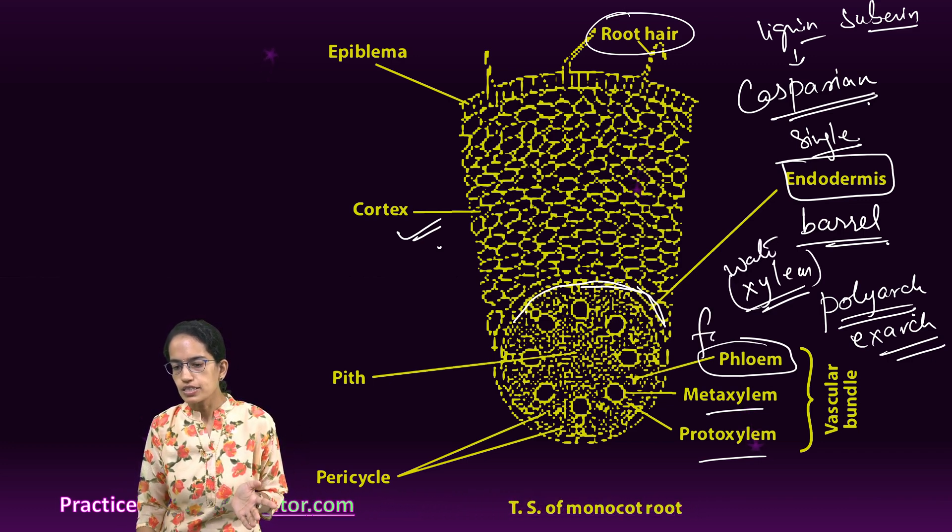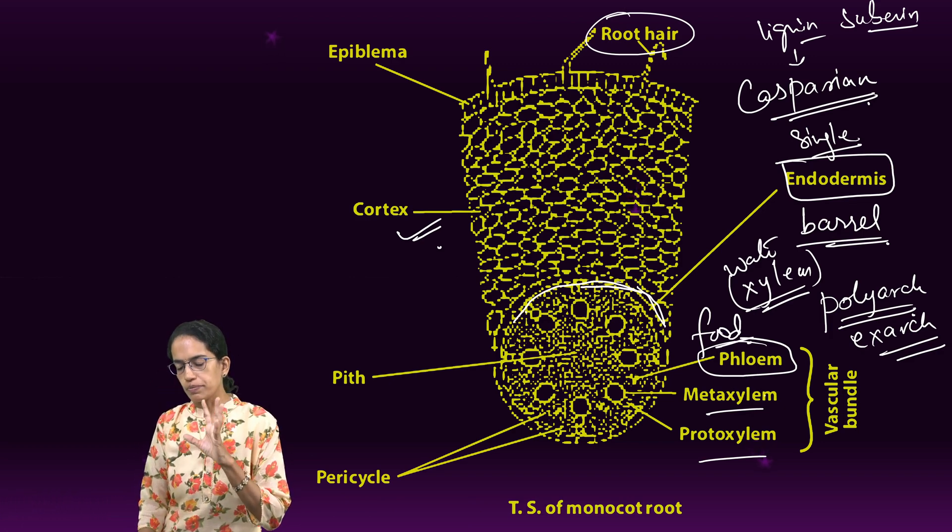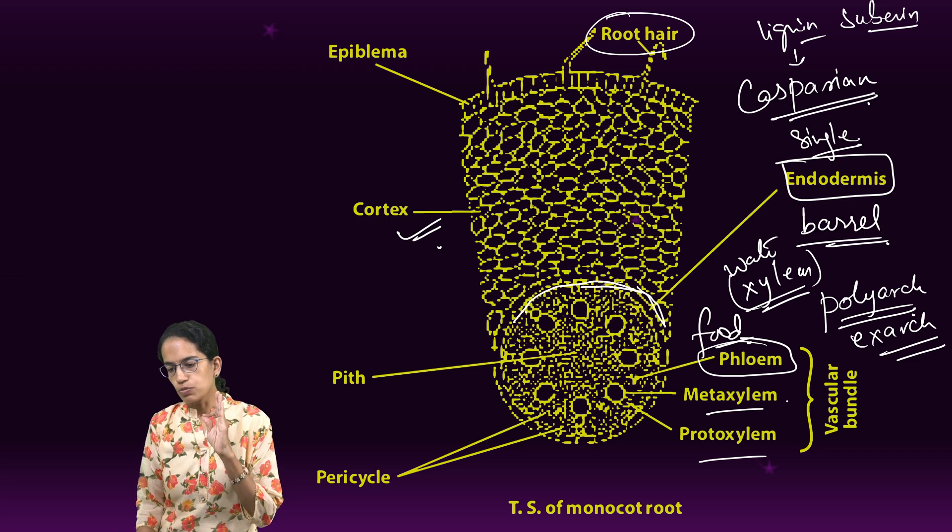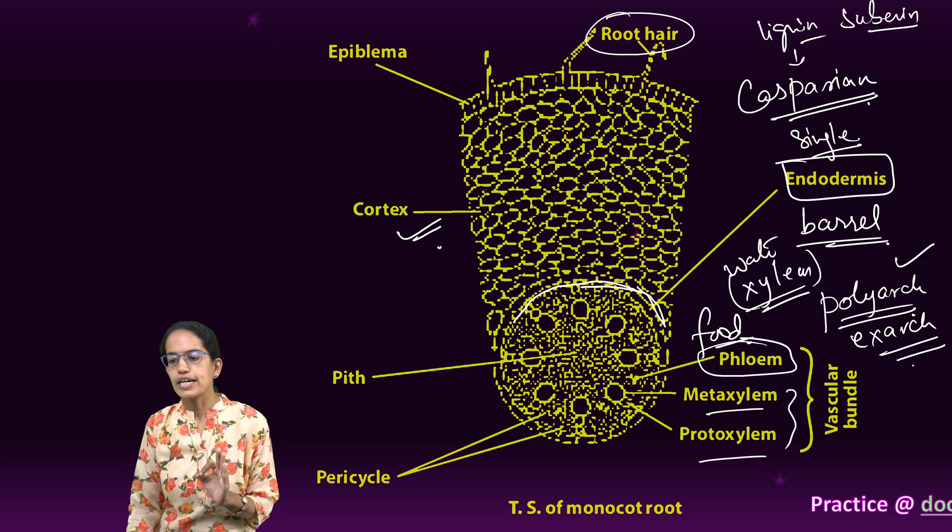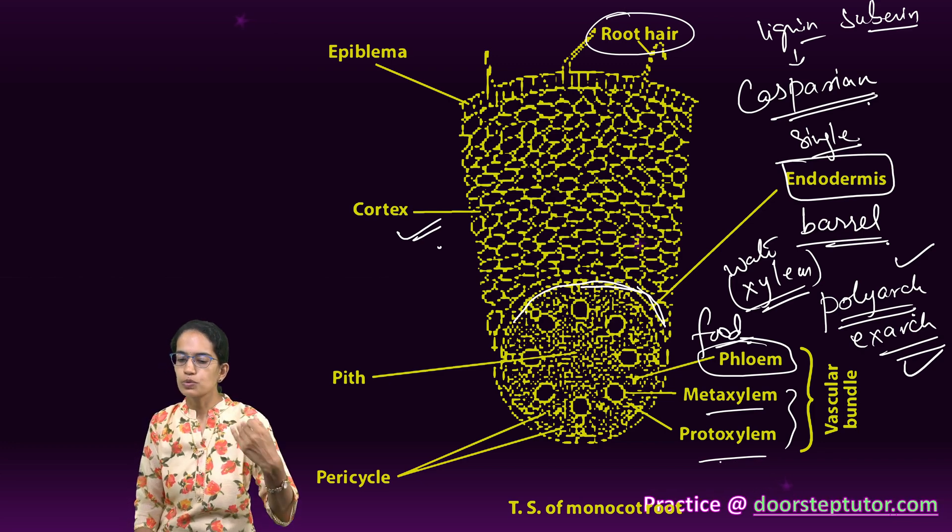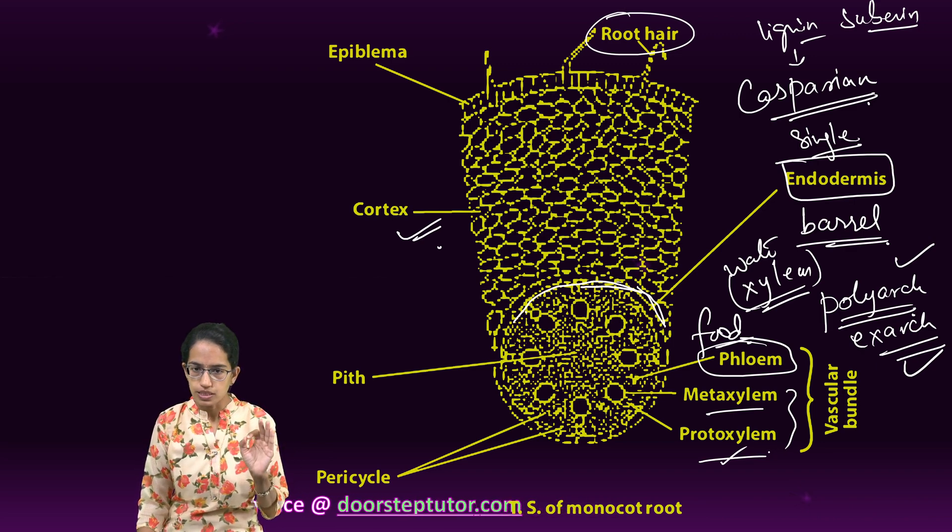Xylem conducts water, phloem conducts food. What is most important in the case of monocot is that the xylem is polyarch as well as exarch, meaning protoxylem lies outside the metaxylem - one of the key aspects to remember.